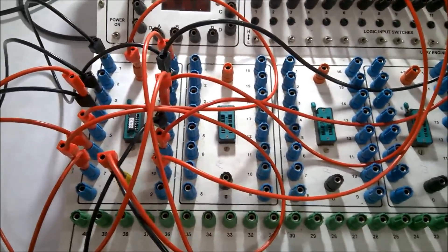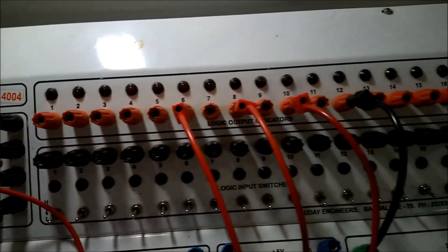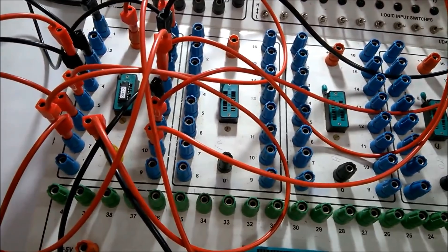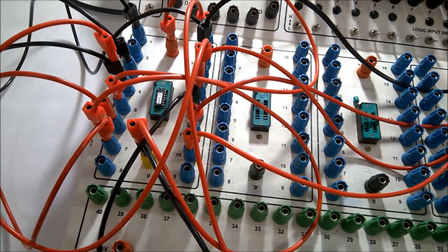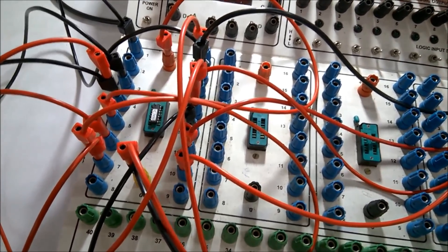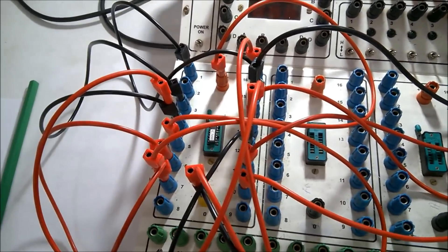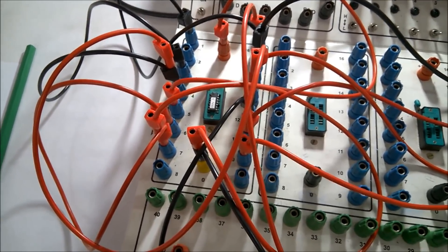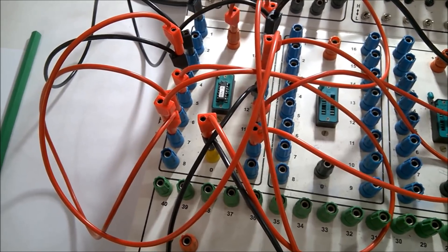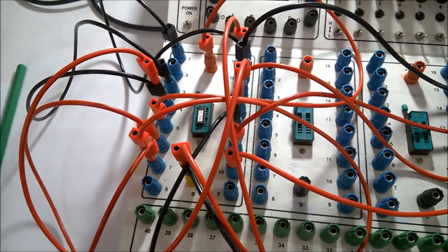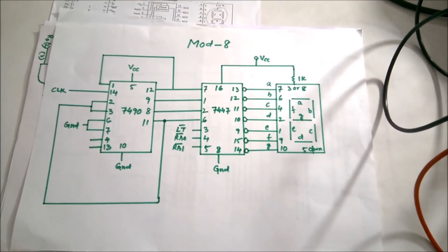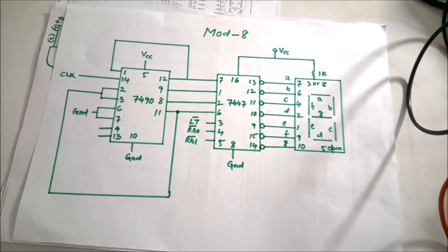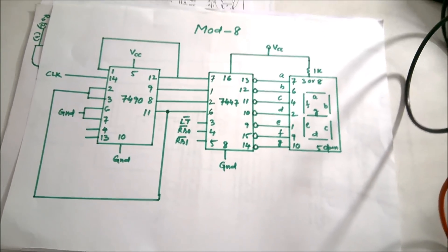We have seen the output in binary form. Now if we want to display it on a 7-segment display, we have to use the 7447 IC — the same connections as done for mod 10. We will connect the 7447 and the 7-segment display to show mod 8 on the 7-segment display.